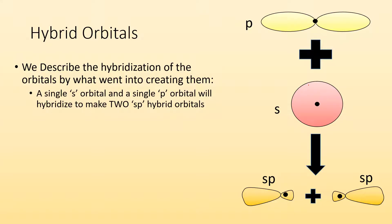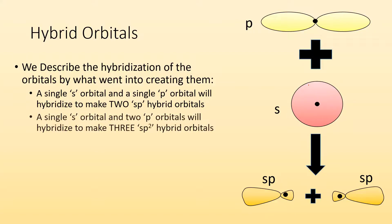If I took an s orbital and a single p orbital and hybridized them, I would make two sp hybrid orbitals — the sp tells me I used one s and one p. If I took a single s orbital and two p orbitals and hybridized all three, I would make three sp2 hybrid orbitals. For sp3 hybridization, I take one s orbital and three p orbitals and mix them to make four sp3 hybrid orbitals. For sp3d, a single s, three p orbitals, and a d orbital went in. For sp3d2, one s, three p orbitals, and two d orbitals are mixed together to make hybrid orbitals.